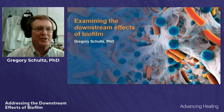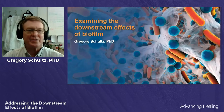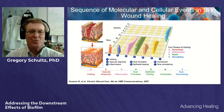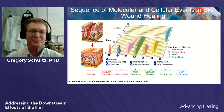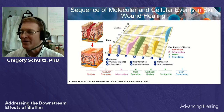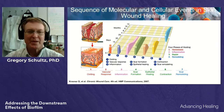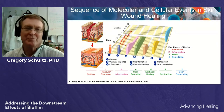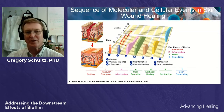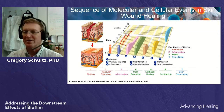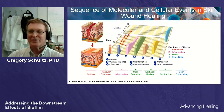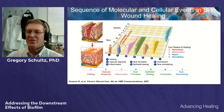Let's examine the downstream effects of biofilm. You're all familiar with the four phases of normal wound healing: hemostasis, inflammation, repair, and remodeling. In the first major event after damage to the skin, the clotting cascade activates to prevent hemorrhaging to death.